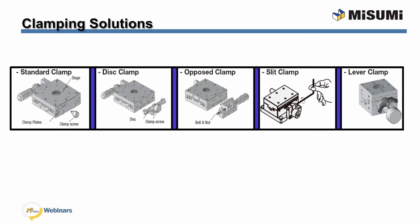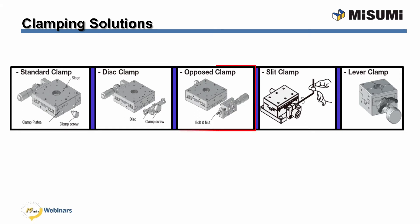There are five different types of clamping mechanism offered depending on the model. With the standard clamp, the clamp plate is pressed against the side of the stage by a clamp screw — this is the most inexpensive and standard setup. With the disc clamp, the stage is immobilized by clamping the disc; no load is applied on the stage surface, and when clamped the stage will not drift. With the post clamp, the carriage is braced by a bolt from the opposite side of the micrometer head, secured with a nut to improve vibration resistance and lock holding power.